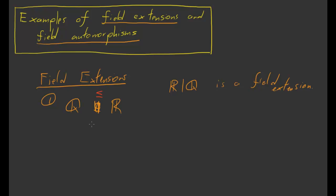This is supposed to tell you, not only is Q a subset of R, but Q is actually a subfield of R. So that was the first example. R over Q is a field extension.